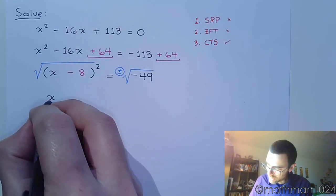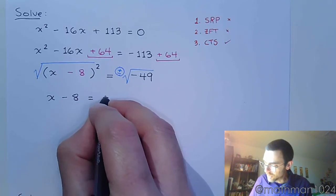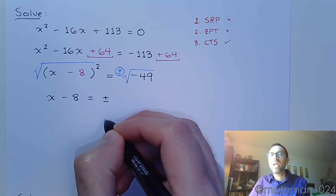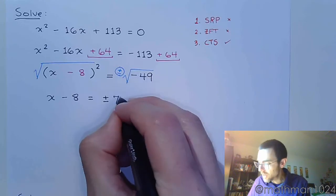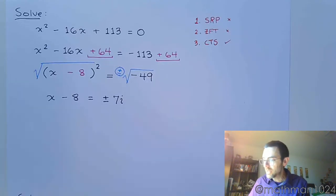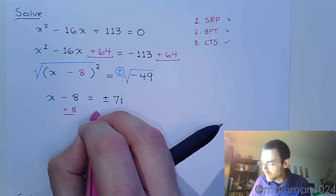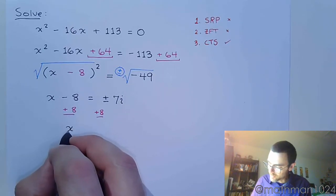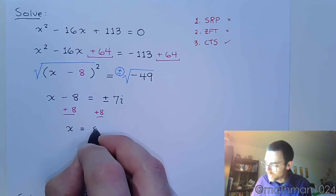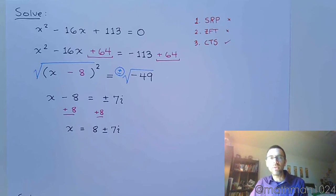So, now, we have x minus 8 is equal to plus or minus, and the square root of 49 is 7. The negative here gives me the imaginary unit, i. And then, we're just one step away from having x completely by itself. So, we add 8 to both sides.